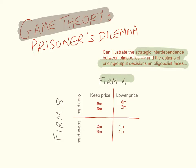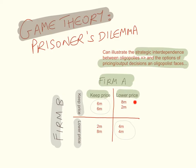Firm A has the option of keeping price the same or lowering its price, and firm B has the same options. If both firms keep price the same, their profits will be $6 million each. If both firms lower their price, their profit will be $4 million each. If firm A lowers its price while firm B keeps its price the same, firm A will make $8 million in profit and firm B will make $2 million.